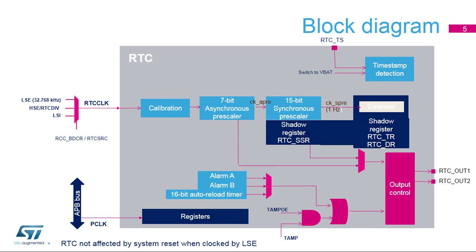The sub-second register cannot be initialized. The calendar, sub-second, time, and date registers content can be read in two different modes. When the bypass shadow registers control bit is cleared, the shadow registers are read. The advantage of this mode is that it guarantees that all three registers are consistent. When the time register is read, the date register is frozen until it is read. When the sub-second register is read, the time and date registers are frozen until the date register is read.